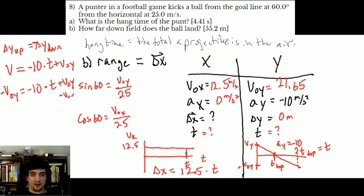If I subtract VOY off both sides, I get negative 2 VOY is negative 10 times T. But I know VOY, so I can actually just plug that in.